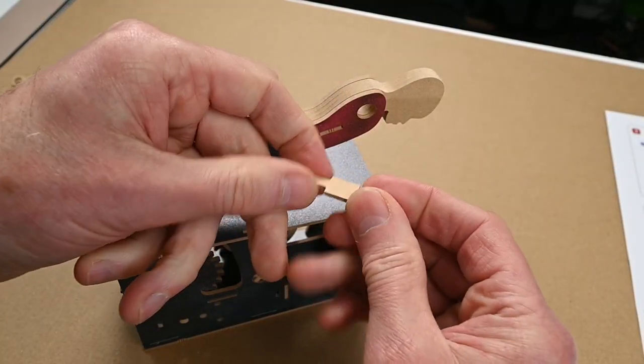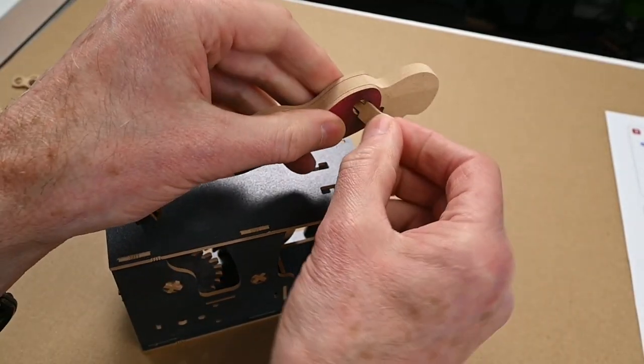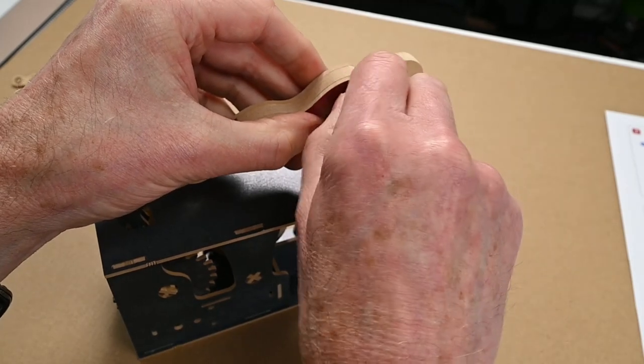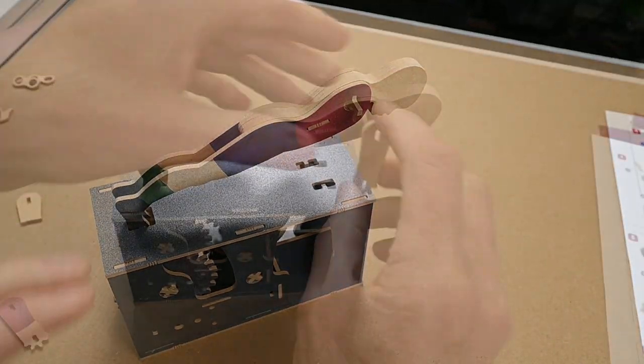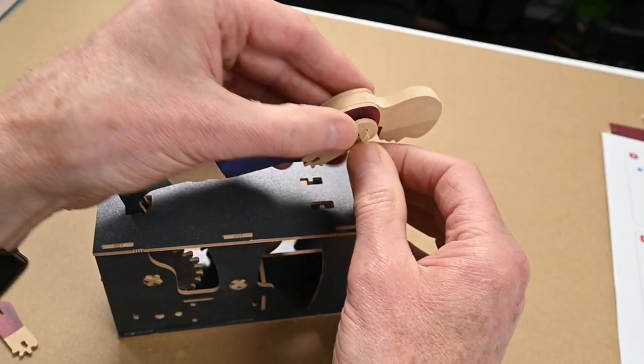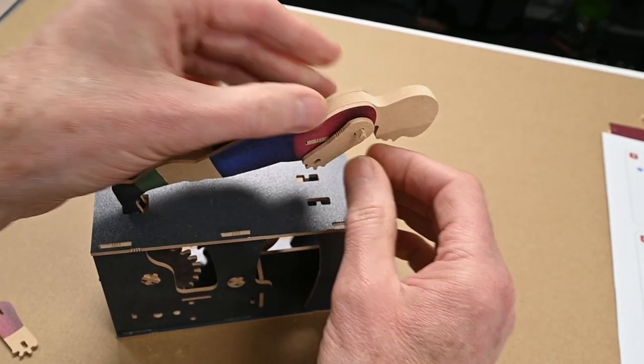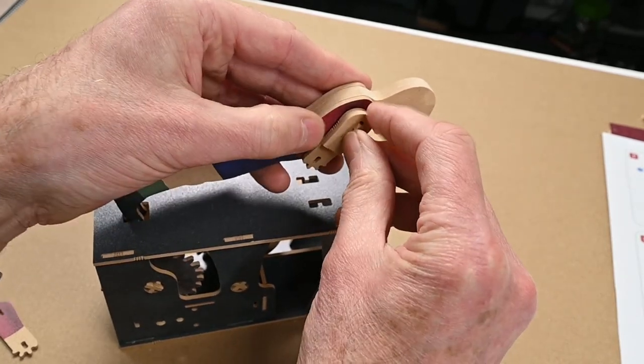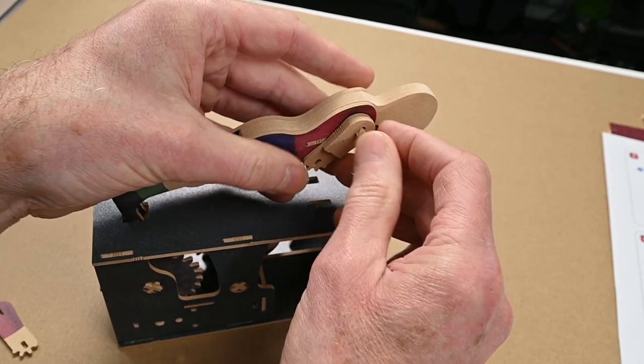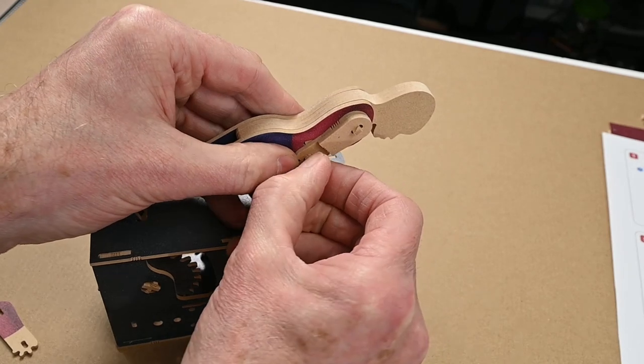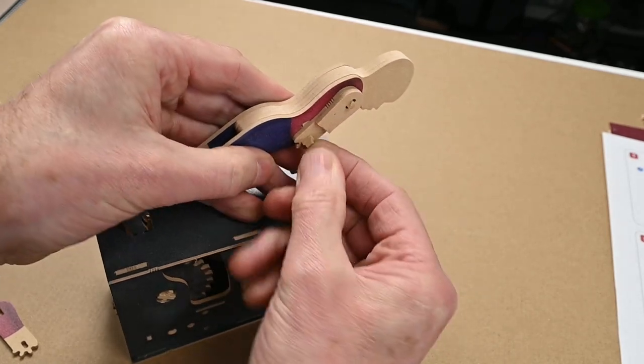This is going to be the hinge piece for the arms so that's going to go in there like that. First one goes there. Then one of these cover, middle pieces like that. And then a little tiny peg there.